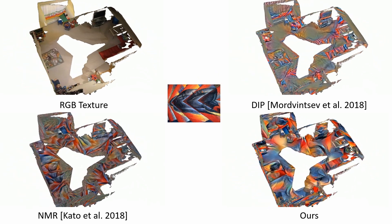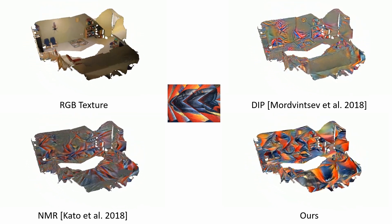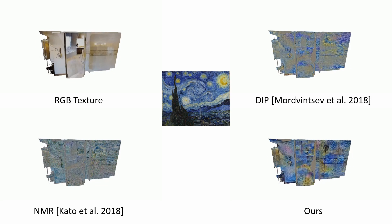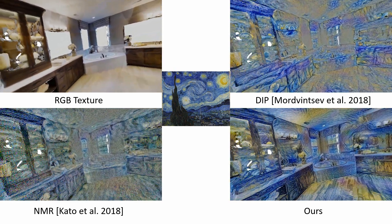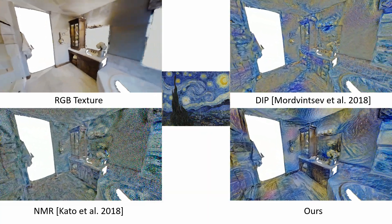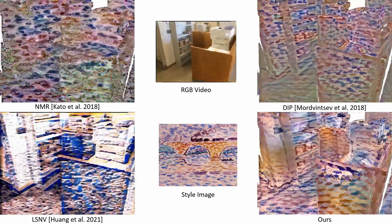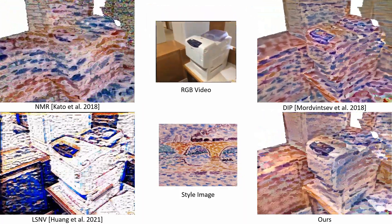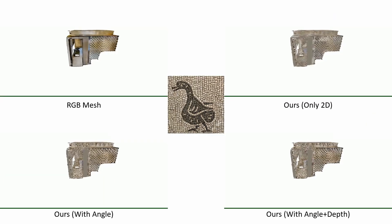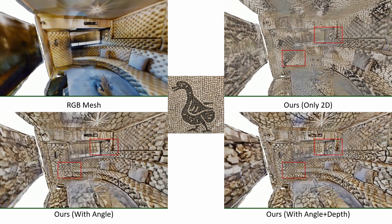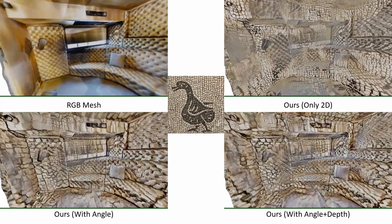We show results for textured meshes on ScanNet and on the Matterport3D dataset. We also compare results on texturing a pre-recorded trajectory. Our proposed angle and depth awareness helps to distinguish different surfaces and create smaller stylizations in the background. We can change the stylization size of a scene by varying the discretization steps of the render parts.